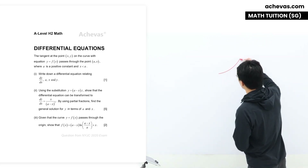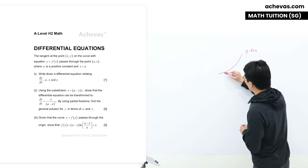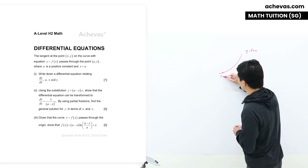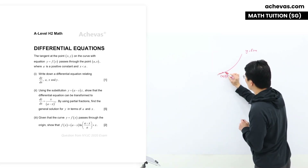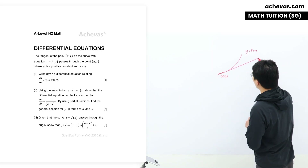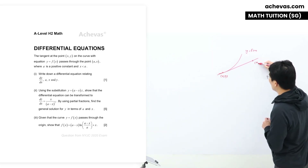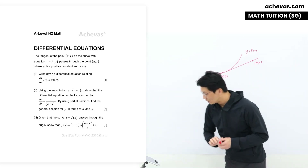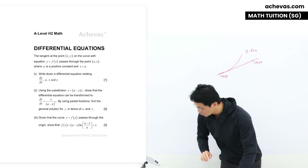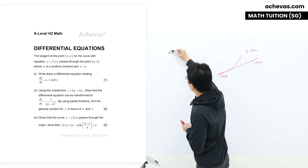Let's imagine the equation y = f(x) looks like this, and it passes through a general point (x, y). The tangent at this particular point will also pass through a point given to be (a, x). Our objective here is to write down a differential equation for dy/dx.